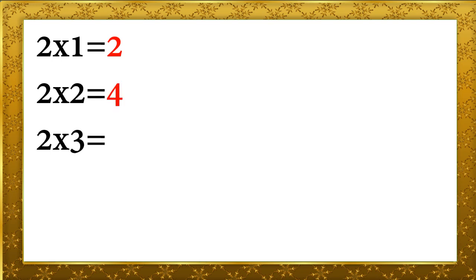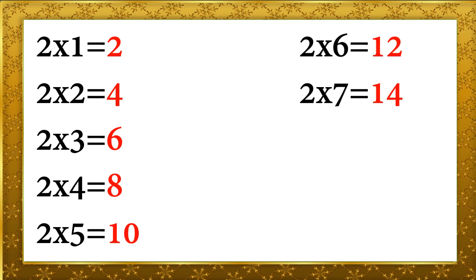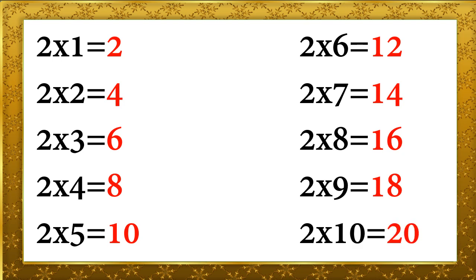2 ones are 2, 2 twos are 4, 2 threes are 6, 2 fours are 8, 2 fives are 10, 2 sixes are 12, 2 sevens are 14, 2 eights are 16, 2 nines are 18, 2 tens are 20.